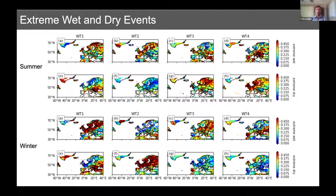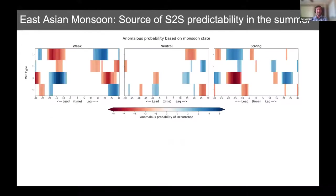We then explored extreme wet and dry events associated with specific weather types to identify when excessively wet or dry conditions occurred. For summer, weather type three across Western Europe displays more extreme wet days and fewer extreme dry days. For winter, weather type one — NAO positive — shows the highest percentage of wet days across Western Europe along with lower persistence of dry days.